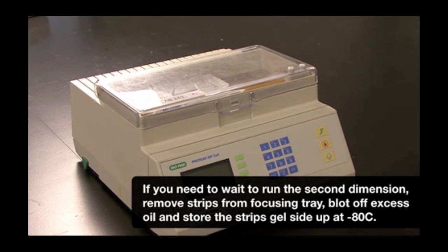First, remove the strips from the focusing tray, blot off the excess mineral oil, and place the strips into a rehydration tray at minus 80 degrees C.